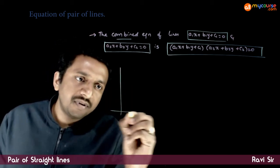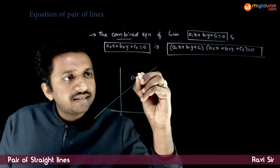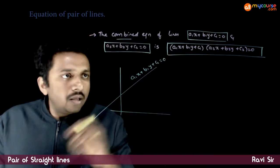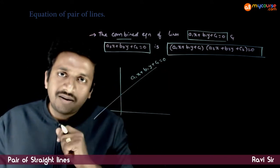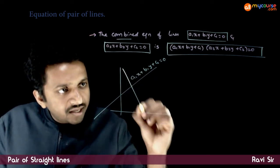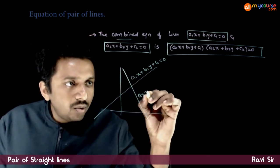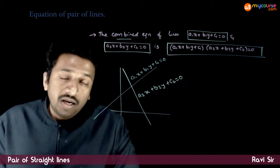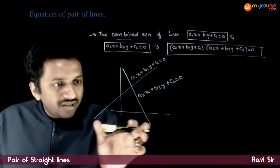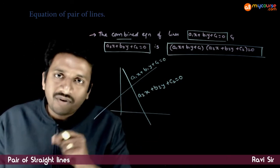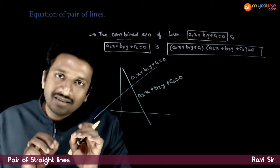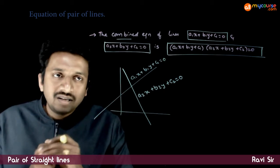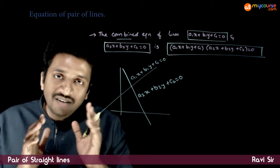That is, if you have a line a1x + b1y + c1 = 0, we know that this equation represents one straight line. And if you have another straight line whose equation is a2x + b2y + c2 = 0, what is the equation of this pair of lines? If I want to talk about both these lines at the same time, what is the combined equation of these two lines? Look at the definition of the equation.